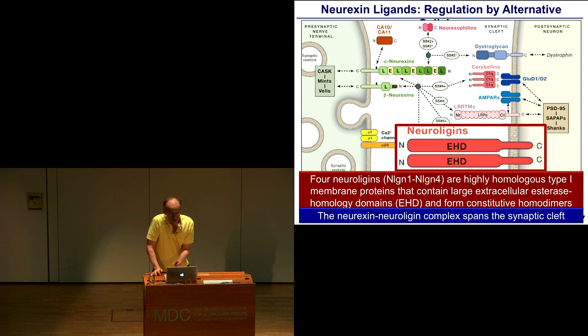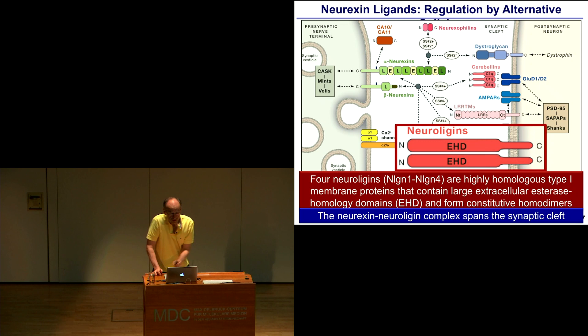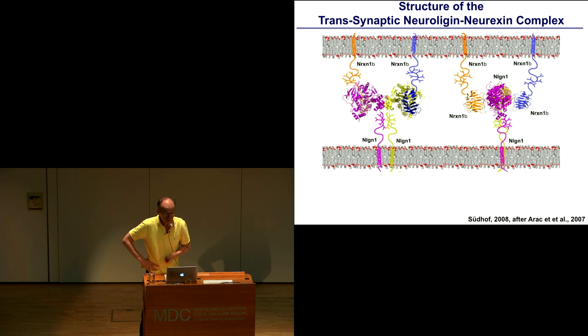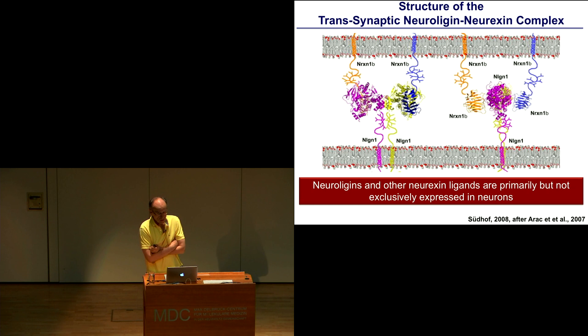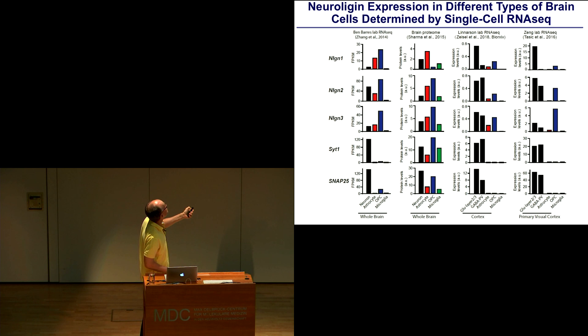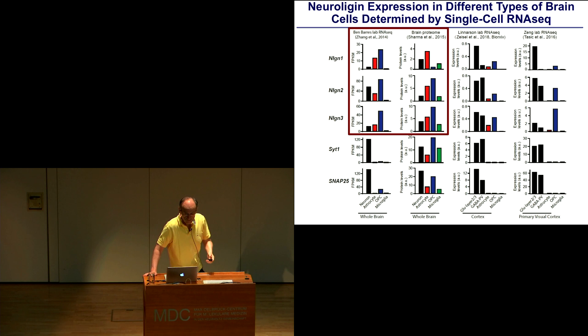Arguably, neuroligins are the most important neurexin ligands because they're evolutionarily conserved. There are four neuroligin genes in mammals. They're highly homologous and composed of a single extracellular domain that is homologous to esterases but is catalytically inactive, and that dimerizes constitutively. The neurexin-neuroligin complex spans the synaptic cleft. What you see here is a structure we obtained some years ago in collaboration with Axel Brunger and Demet Arak's labs, showing that neurexin-1-beta and neuroligin-1 form this trans-synaptic complex where the dimerization of neuroligin-1 causes two neurexins to bind across the synaptic cleft.